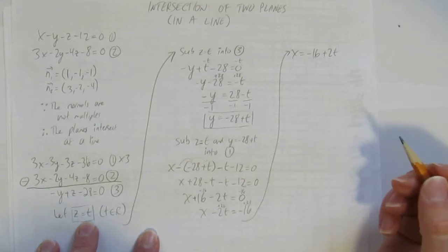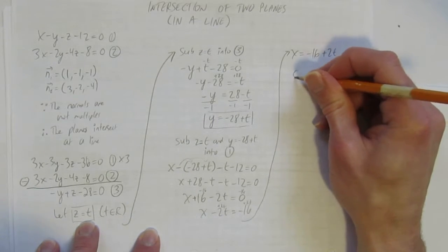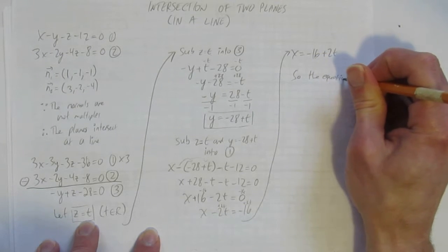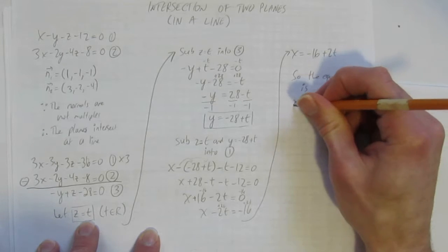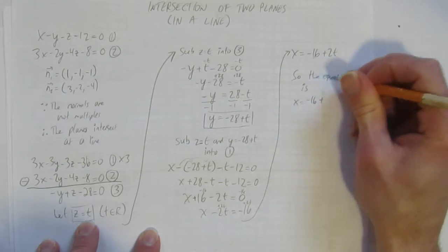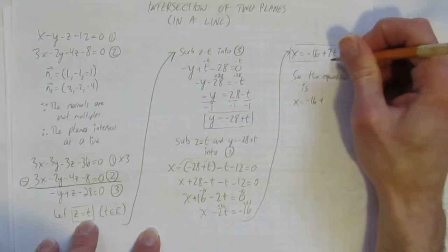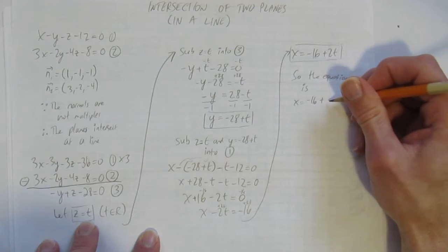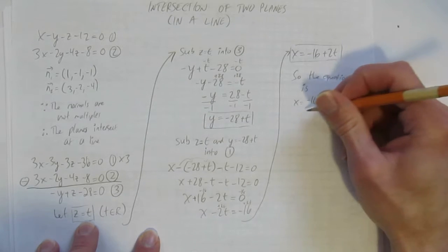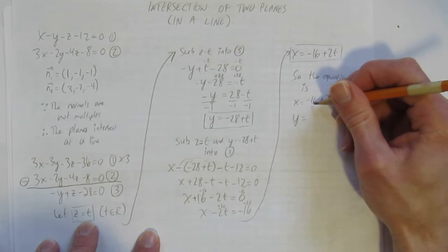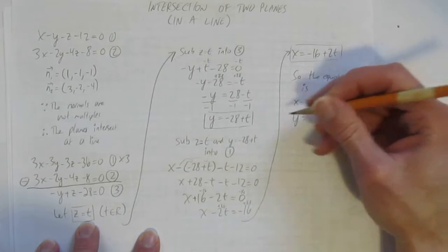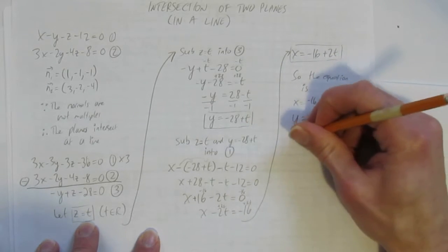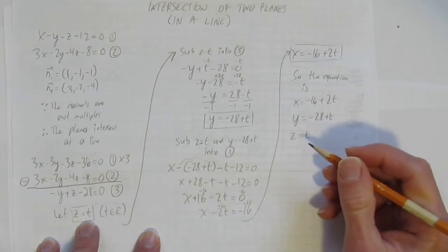So the equation is. And now I've got x equals negative. I'm just rewriting them all. I already have them all. It's here. I'm putting them all together though. And you could put a therefore instead of the word so. Both are good. I've got my x is negative 16 plus 2t. My y is negative 28 plus t. And my z is t. And I've got my answer. This is a parametric equation.